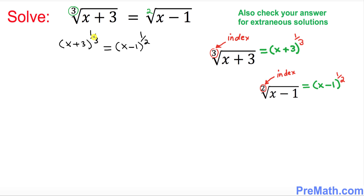What do you see at the bottom of these exponents? These are 3 and 2. So what is the least common denominator of these two numbers? 3 and 2 gives us 6. That means we are going to take an exponent of 6 on both sides, and that is going to remove our fractional exponents.